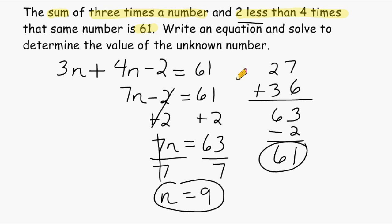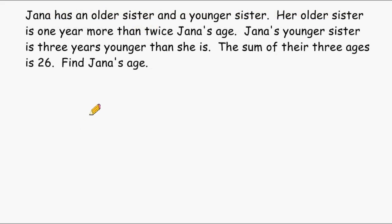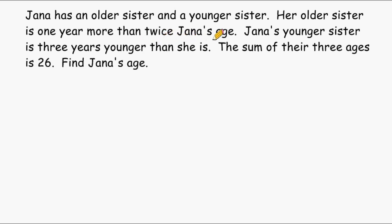Let's try another example. This problem reads: Jana has an older sister and a younger sister. Her older sister is one year more than twice Jana's age. Jana's younger sister is three years younger than she is. The sum of their three ages is twenty-six — find Jana's age. We know that if we add the three ages together it equals twenty-six. Both sisters' ages are compared to Jana's age, so let's create a variable: let A equal Jana's age.